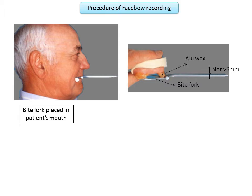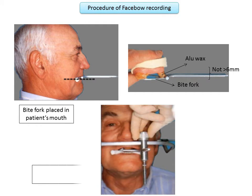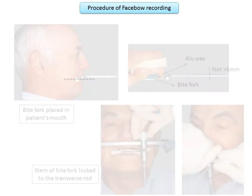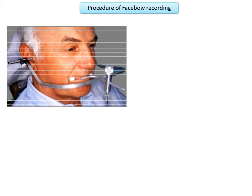The total thickness of the bite fork along with the Aluwax should not exceed 6 millimeters. The bite fork with bite registration material is placed in the patient's mouth while the patient is wearing occlusal rims; a thin layer of petroleum jelly can be applied to the occlusal rim for easy removal. The midline of the bite fork must coincide with the midline of the maxillary occlusal rim, and the stem should be parallel to the sagittal plane. The patient closes into the bite fork, the stem is locked to the transverse rod, the U-shaped frame is positioned, and the condylar rods are moved according to the reference points before locking the frame.